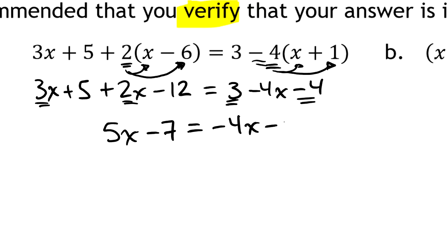On the other side, I've got this positive 3 and a negative 4. And when I combine the positive 3 and the negative 4, that's a negative 1. So this side becomes minus 4X, and then there's a minus 1. Let's see. Next, I guess I'm going to add 4Xs to each side.